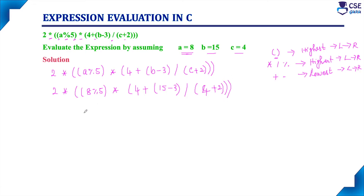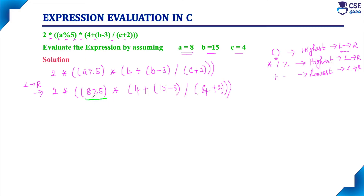Brackets are having the highest priority, so first we evaluate the expressions within brackets. Within the brackets we have: 8 % 5, 15 - 3, and 4 + 2. There are three brackets with equal priority, so we go for associativity, which is left to right. The first bracket from the left is 8 % 5, so we evaluate that first.